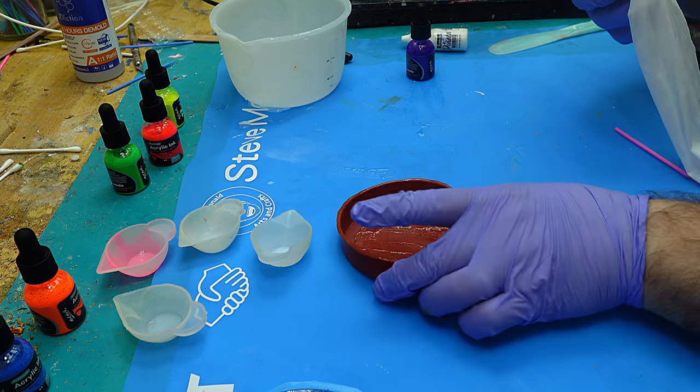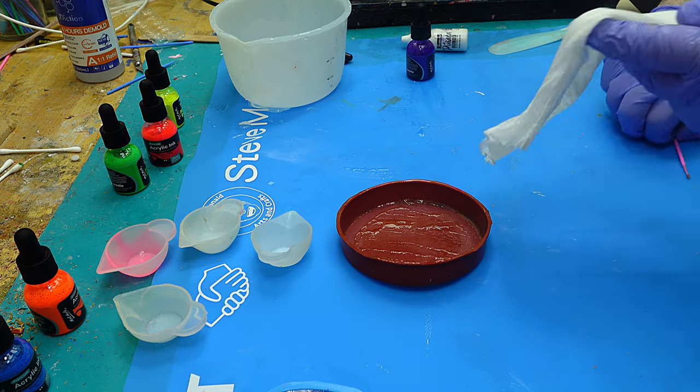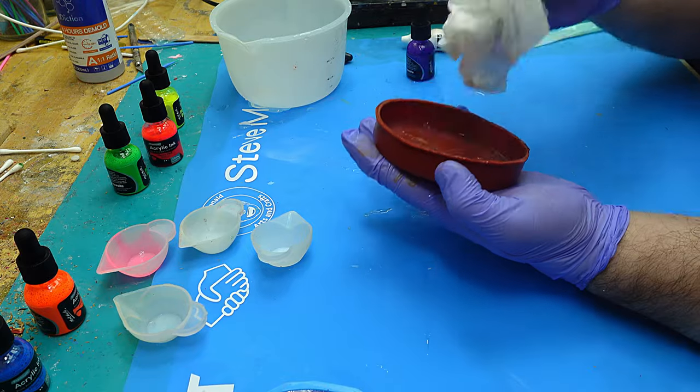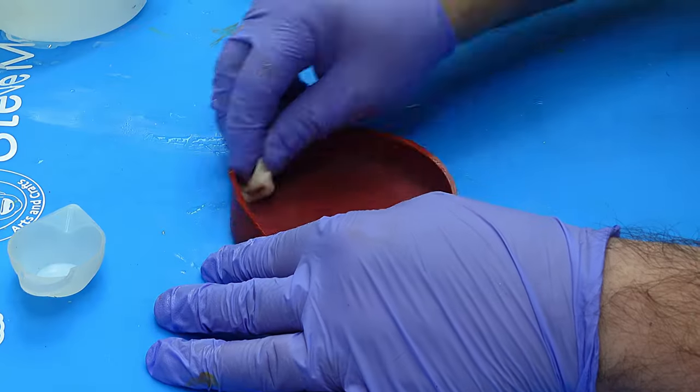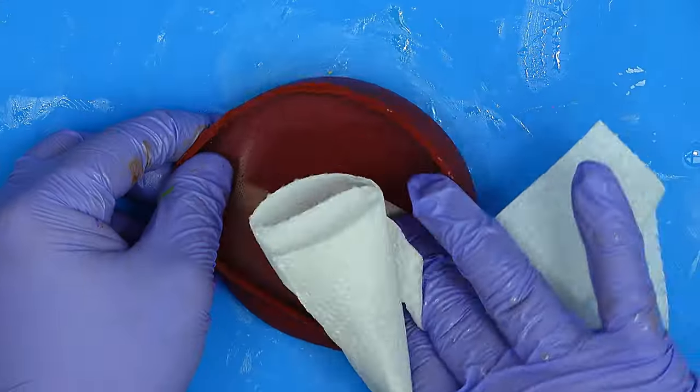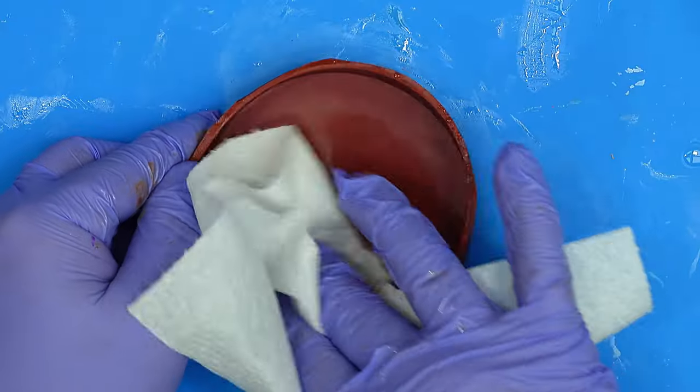If you've got a sticky mess in your coaster or anything where it's not cured properly or you've made a mistake, I use these big wipes. They're brilliant at cleaning out coasters. That's all nice and clean now. I'm going to dab that dry, not rub it, because I don't want to take the shine off the mold.